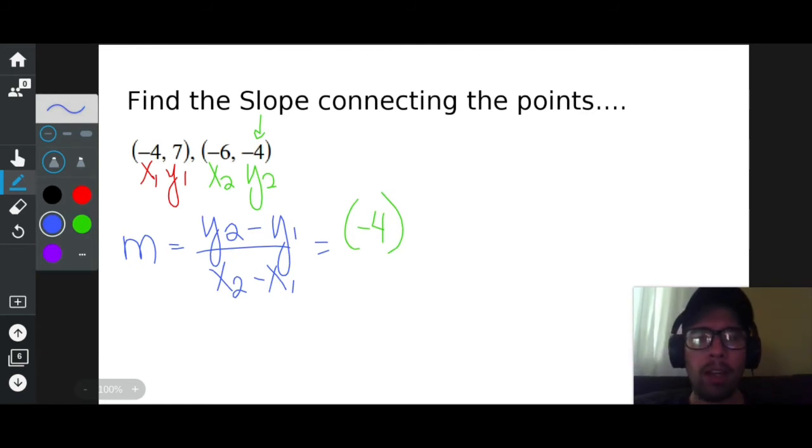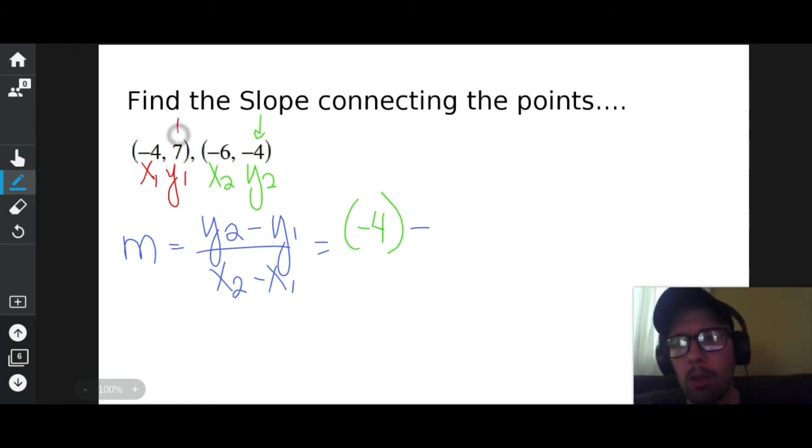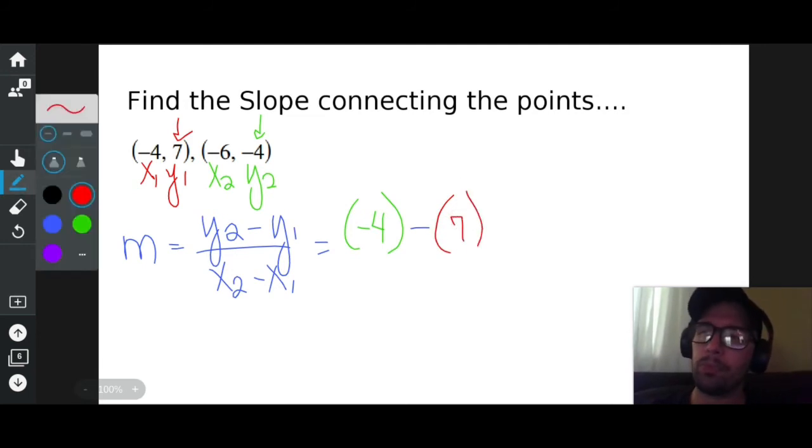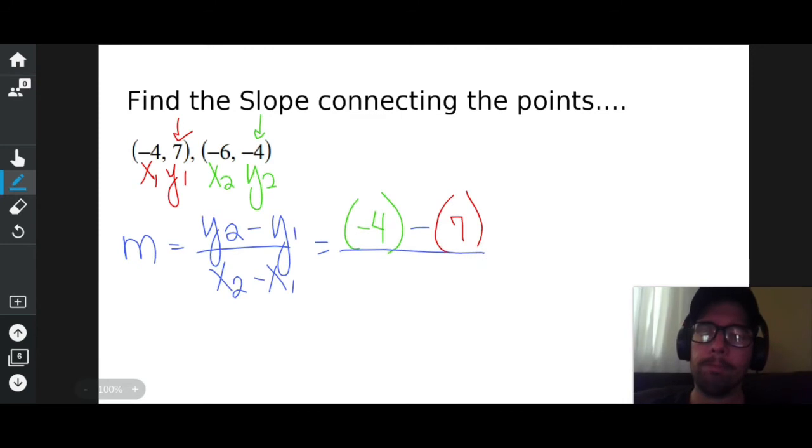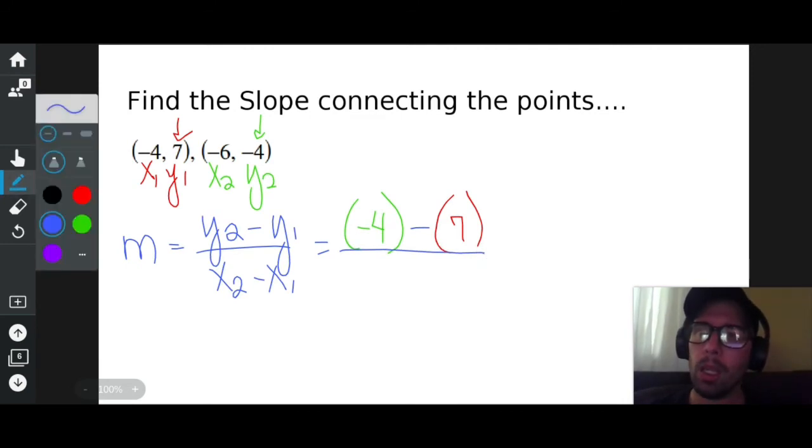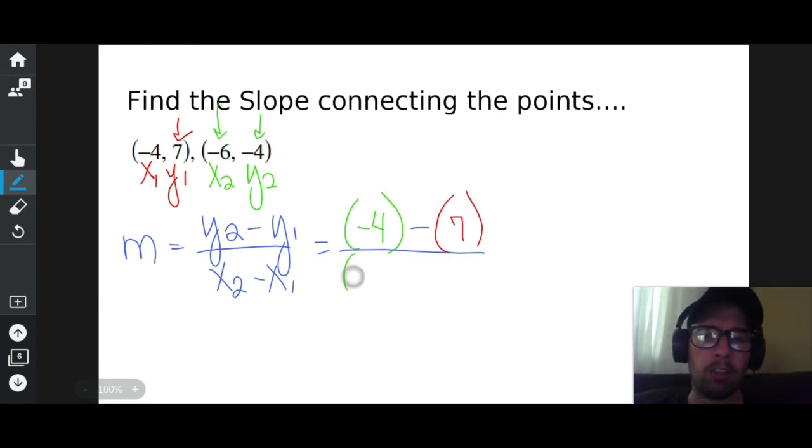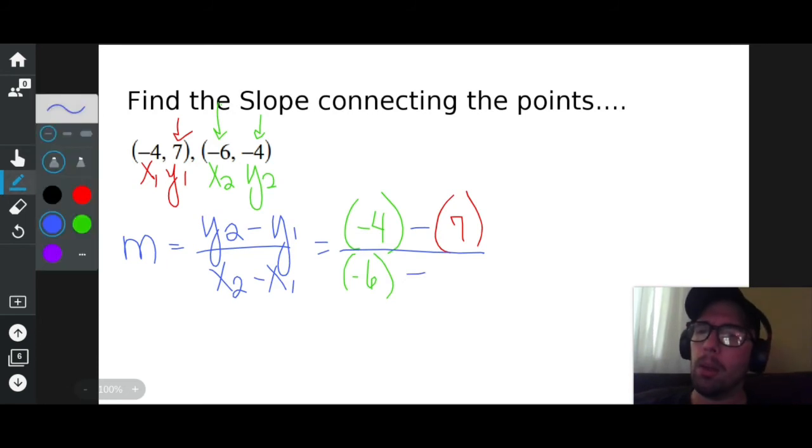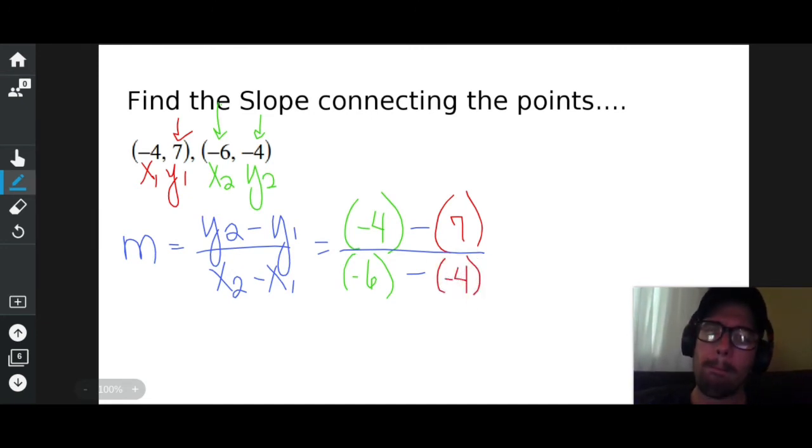Now what I have to do is replace the y sub 1 and the x sub 2s and all of those with the numbers that I have there. So y sub 2 is negative 4. So instead of y sub 2, I'm going to write out parentheses negative 4. I'm going to write out the minus sign that was there. And instead of y sub 1, y sub 1 is 7. So I'm going to replace y sub 1 with 7 divided by x sub 2, according to what I labeled, is negative 6. So I'm going to replace x sub 2 with negative 6. I'm going to write out that minus sign. And I'm going to replace x sub 1 with negative 4. Like so.